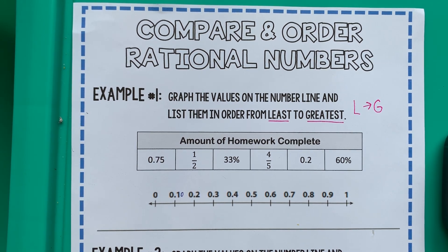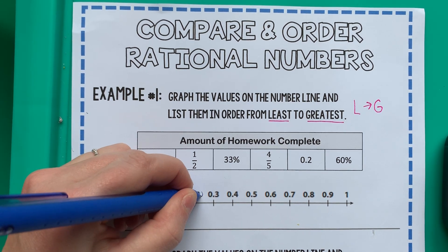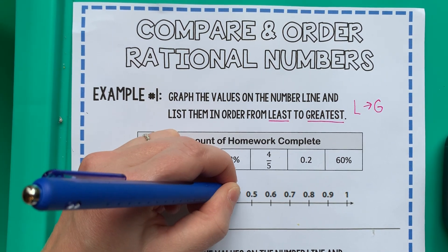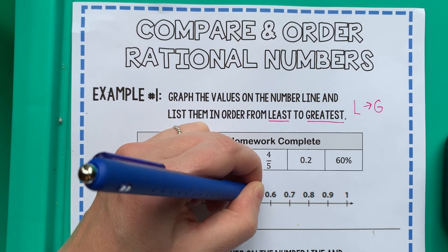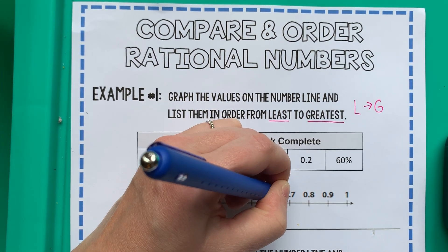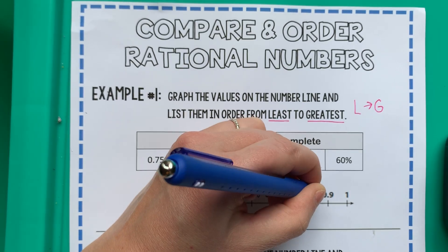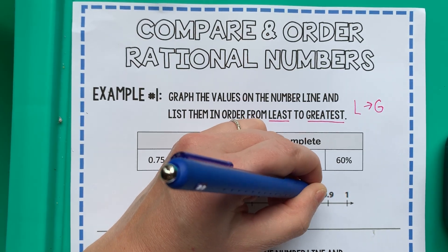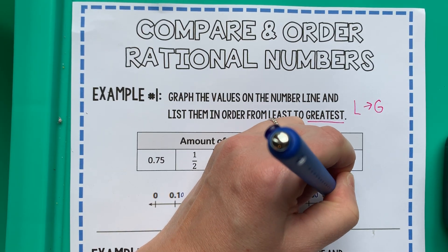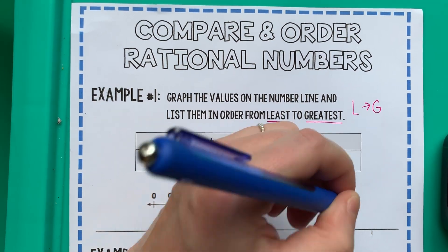So that would be like 10 cents, 20 cents, 30 cents, 40 cents, 50 cents, 60 cents, 70 cents, 80 cents, 90 cents, and last but not least, a dollar.